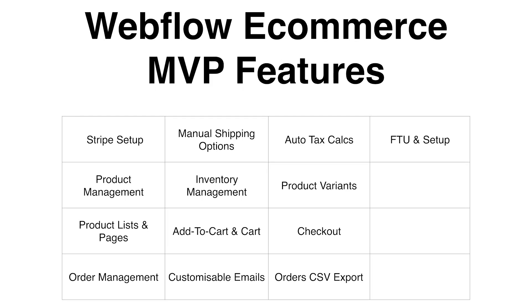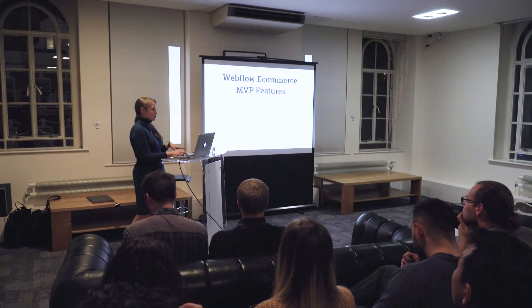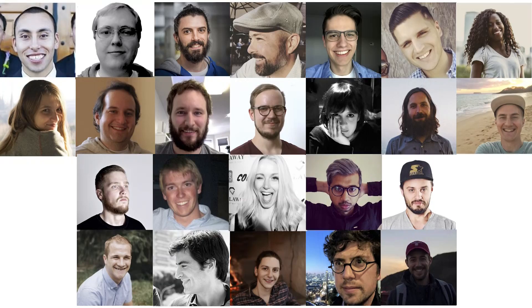If you talk about the eCommerce feature at all, it's actually kind of like an umbrella feature, because inside this one feature there are many small features that were built as separate projects — like Stripe Setup, Product Manager, Product Page, Product Variants, Checkout, Auto Tax Calculation, Customizable emails, and many others not even included in this slide. And it was all built over the last year by all these amazing people.